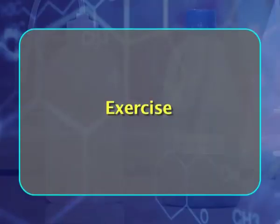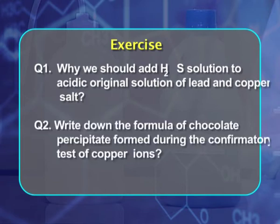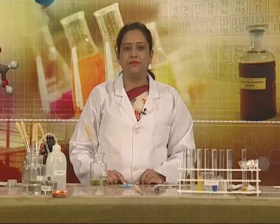Let me leave you here with a small exercise. Why should we add H2S solution to acidic original solution of lead and copper salt? Secondly, write down the formula of the chocolate precipitate formed during the confirmatory test of copper ion.